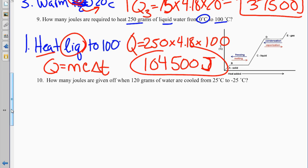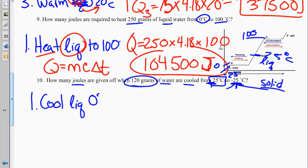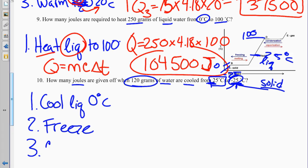Problem 10: how many joules are given off when 120 grams of water are cooled from 25 degrees Celsius to negative 25 degrees Celsius? We have three Q's. First, cool the liquid to 0. Then freeze the water. Then cool the solid down to negative 25 degrees Celsius.